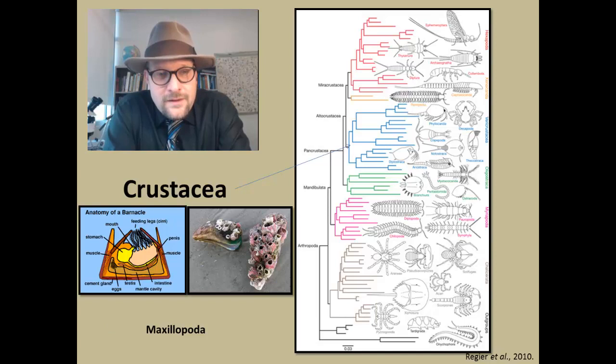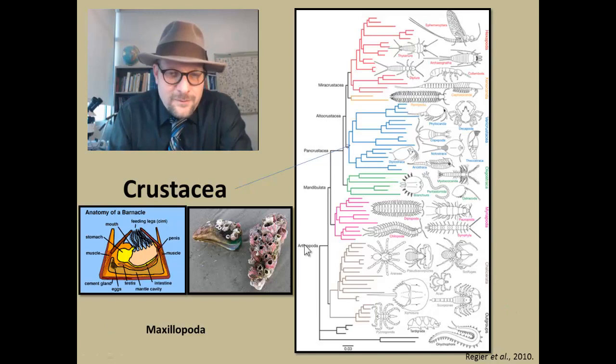The next group are the Maxillopoda. These include the barnacles and fish lice and some other things. Barnacles are just bizarre creatures—they are an arthropod that decided to become sessile. So these are related to shrimp. They develop an exoskeleton that they can continually grow and live within a sessile form, burrowed against organisms.